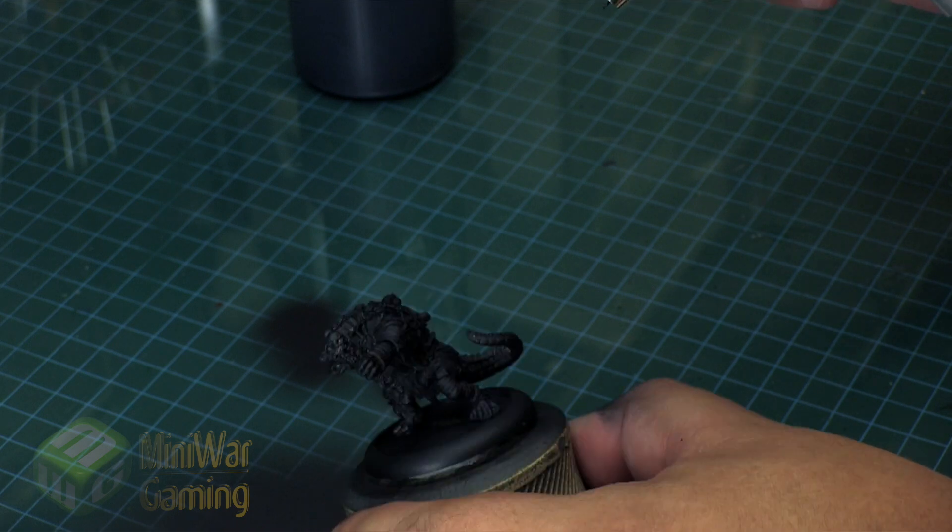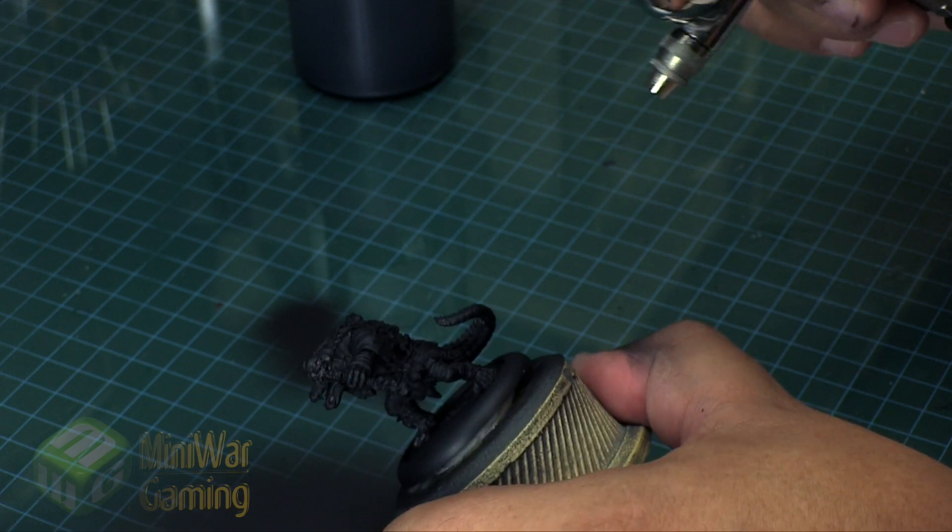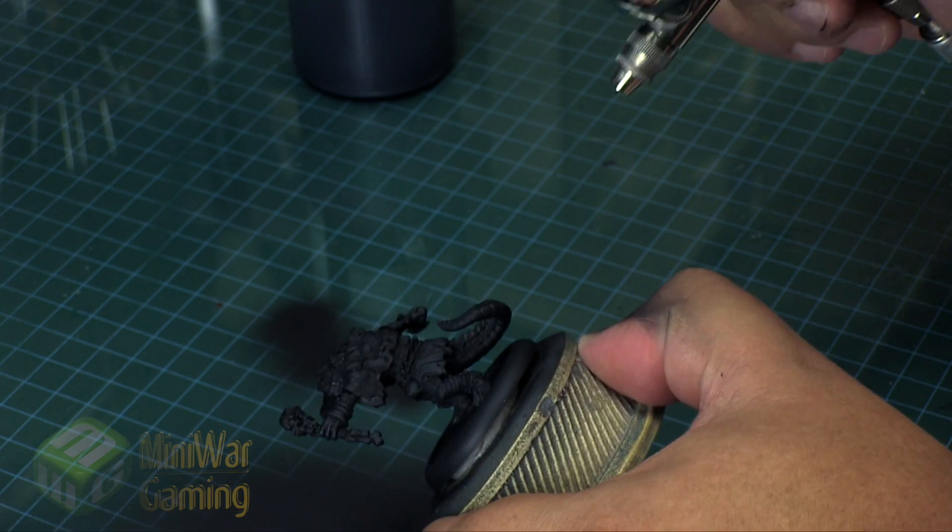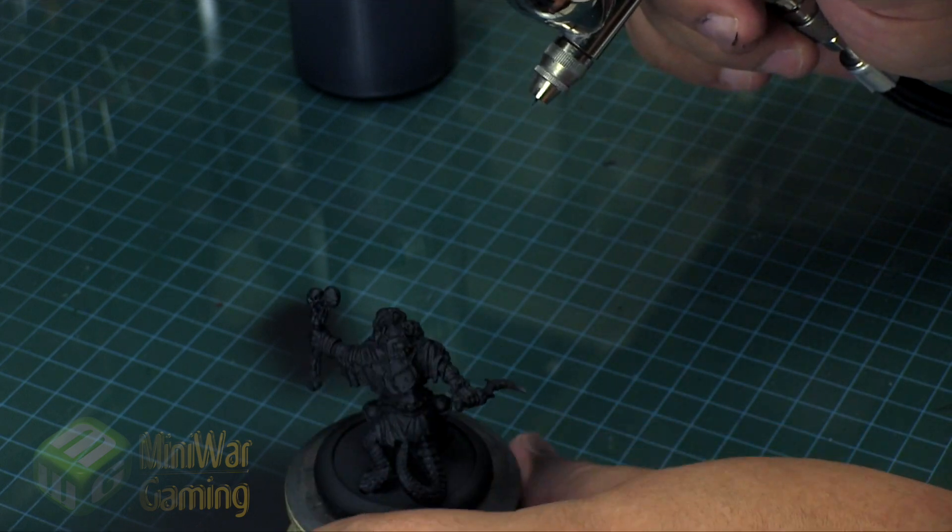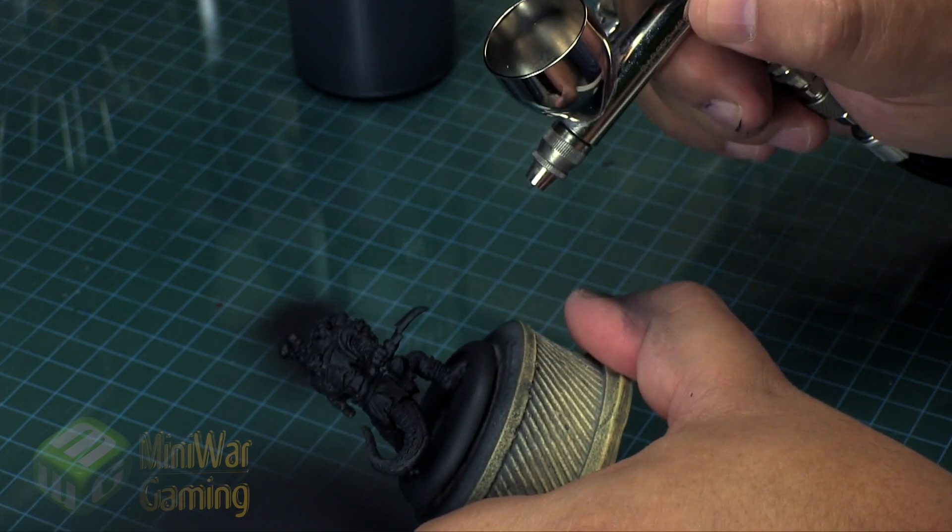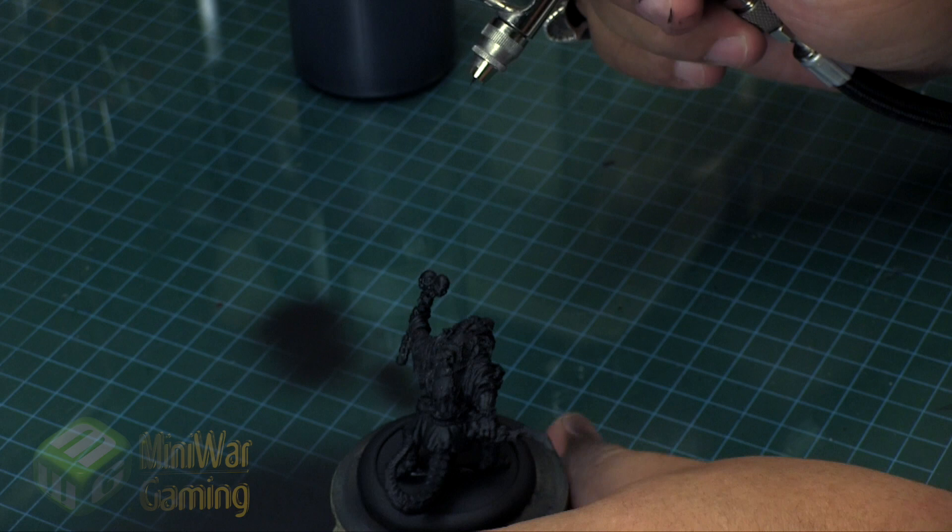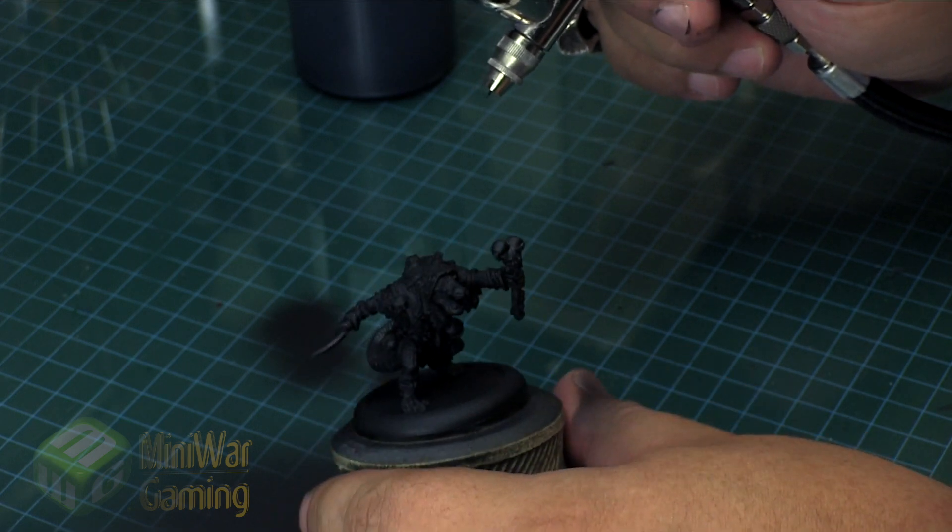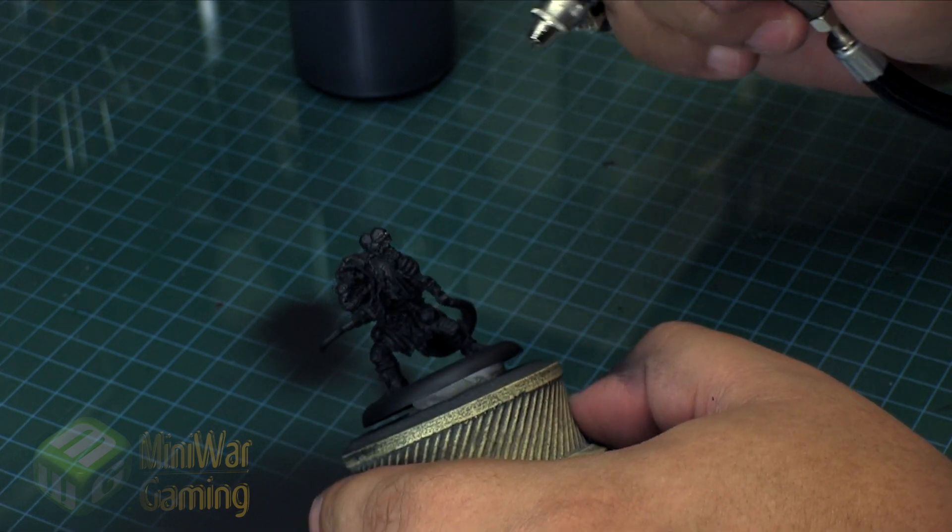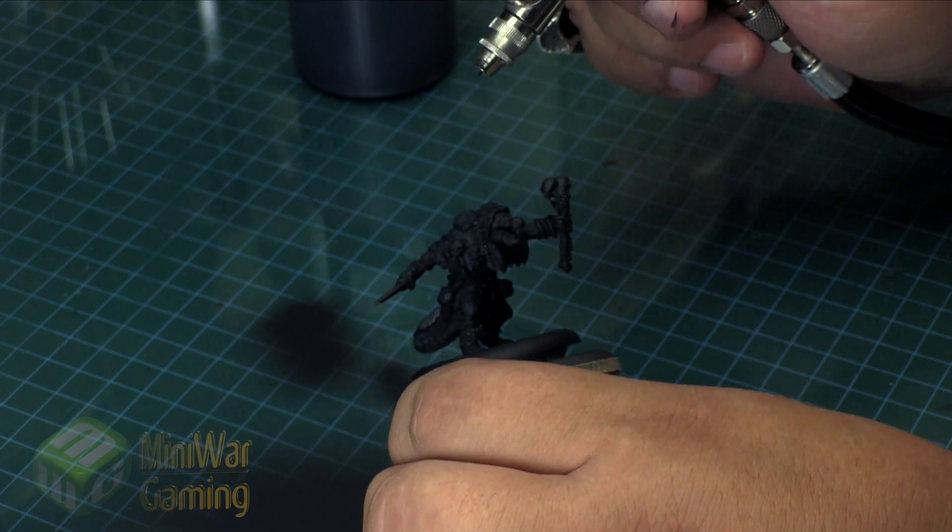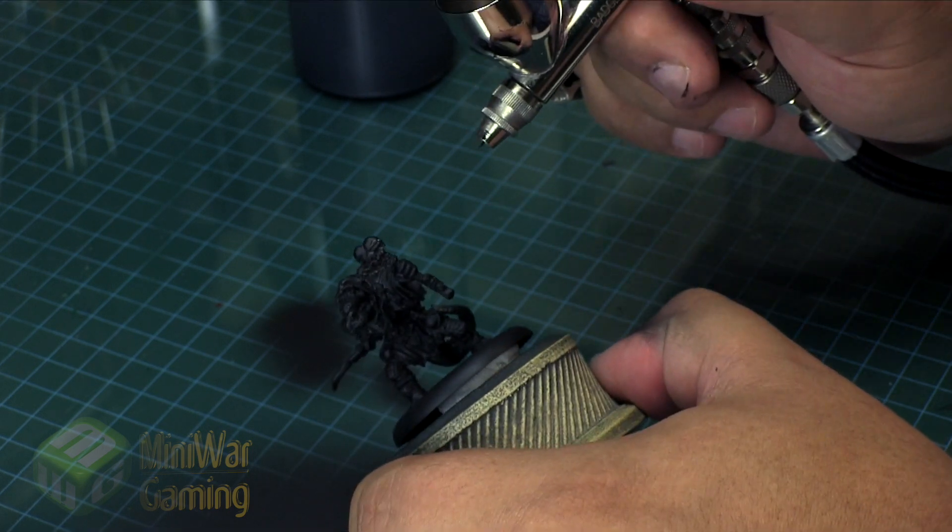Again, not every little space here is covered in primer, but he is pretty generally primed up here. You can still see some silver there and I'm fine with that.